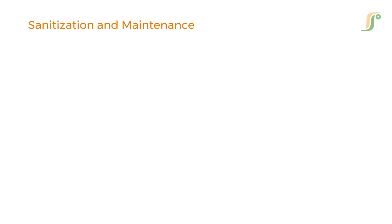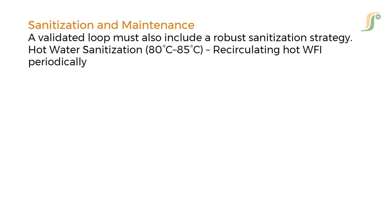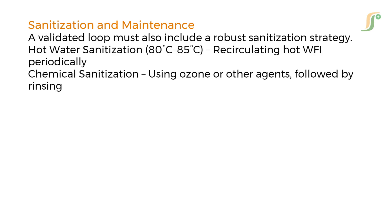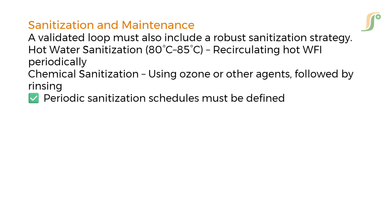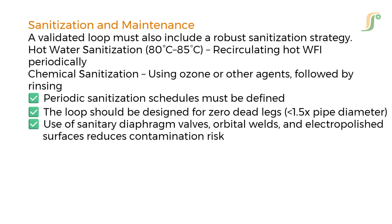A validated loop must also include a robust sanitization strategy. Common methods include hot water sanitization at 80 to 85 degrees Celsius, recirculating hot WFI periodically, and chemical sanitization using ozone or other agents, followed by rinsing. Periodic sanitization schedules must be defined. The loop should be designed for zero dead legs — less than 1.5 times the pipe diameter. Use of sanitary diaphragm valves, orbital welds, and electropolished surfaces reduces contamination risk.